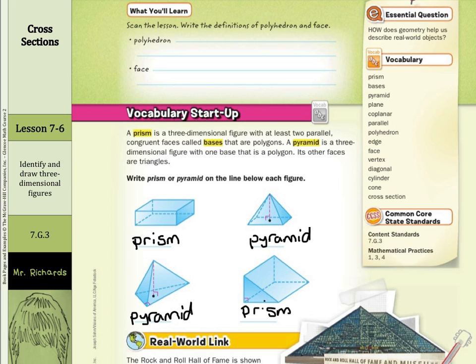So to summarize, the difference between a prism and a pyramid, a prism will always have at least two parallel faces. A pyramid, they have faces that are triangles only. It's a big difference between these two.